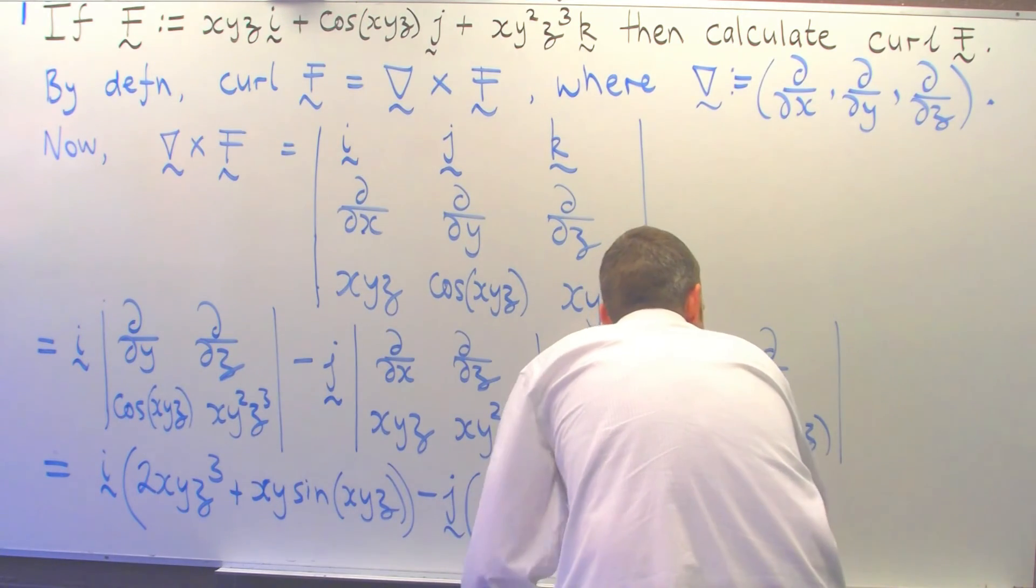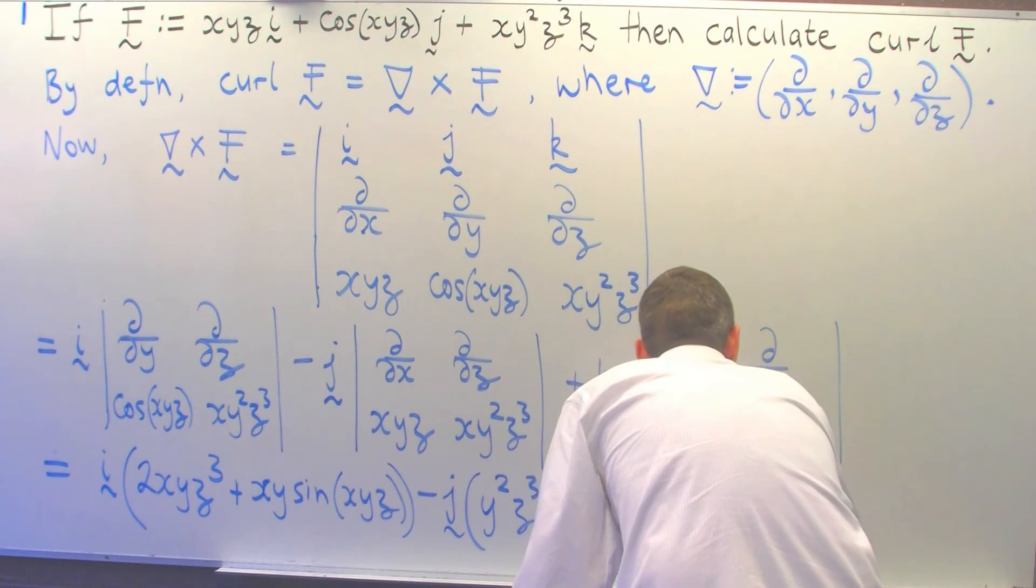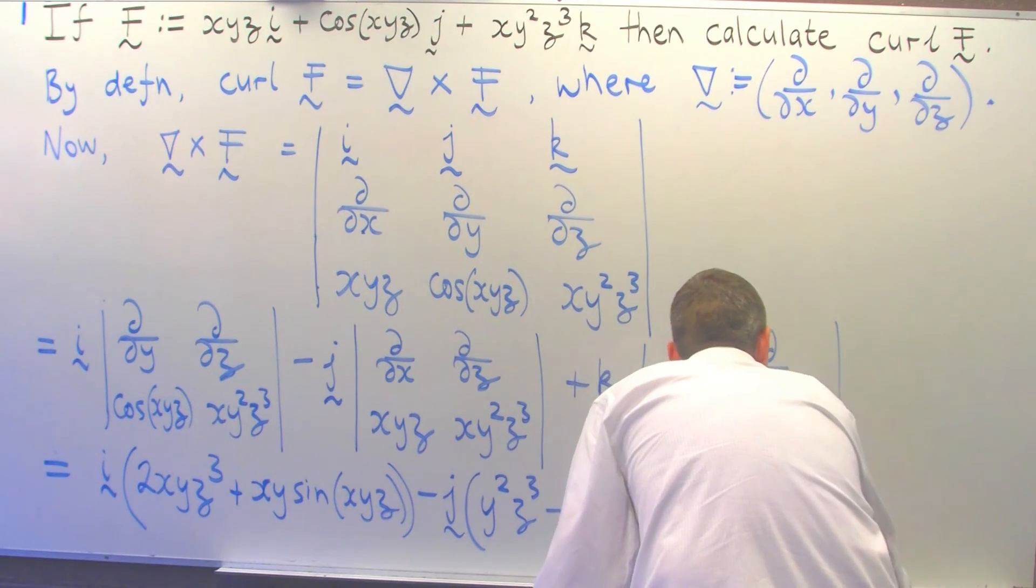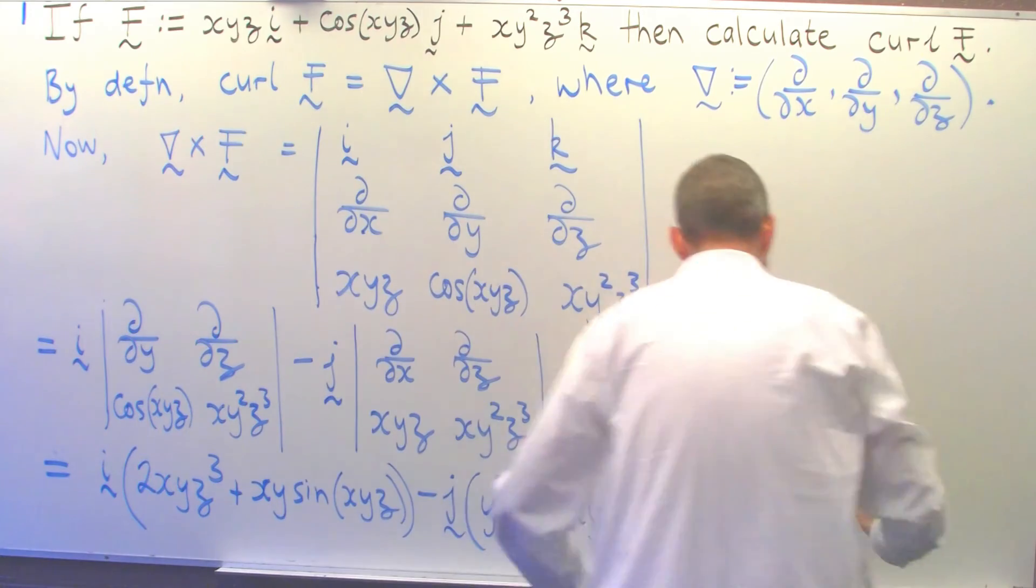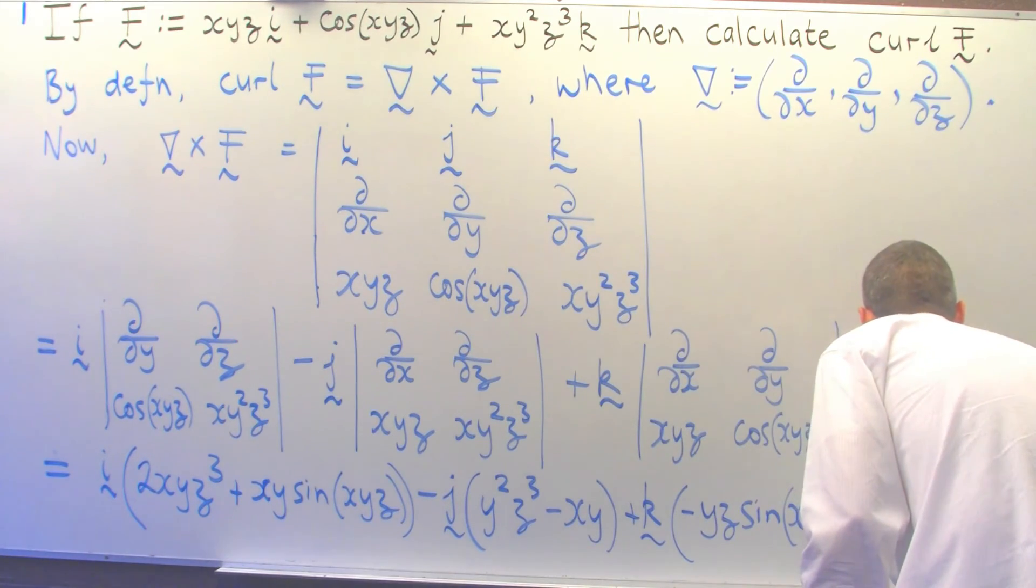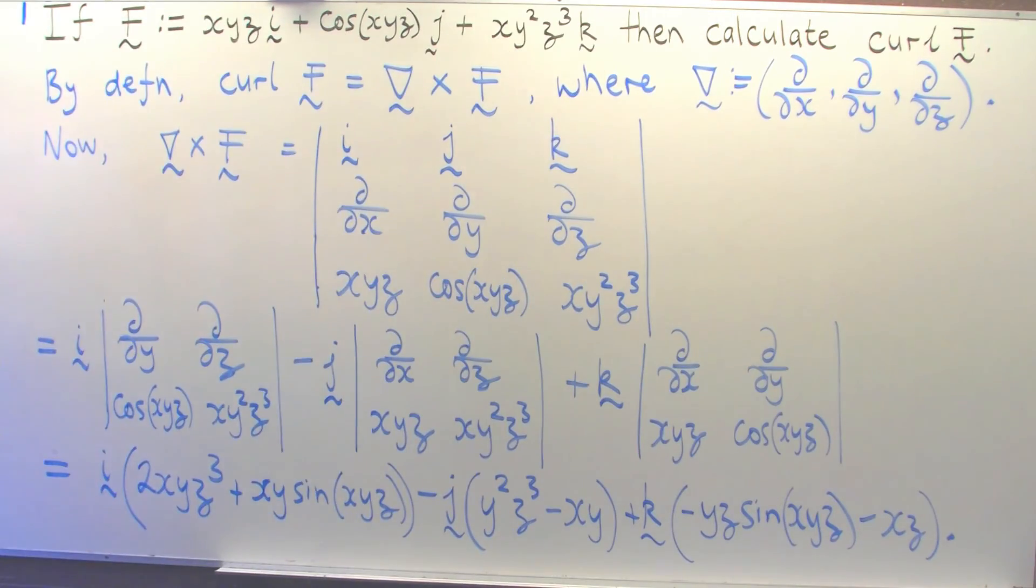So that's going to be minus yz·sin(xyz) minus xz. We've produced the curl now, the curl of this given vector field. Notice that it's a vector field itself.